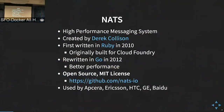It's a high performance messaging system. It was created by Derek Collison, the CEO of AppSera. It was first written in Ruby in 2010, originally by Cloud Foundry. Then it was rewritten in Go in 2012, and that made it very fast — it already had decent performance with Ruby, like 150,000 messages per second, but with the Go rewrite it became extremely fast. It is open source under the MIT license, and you can find it under the NATS.IO organization.